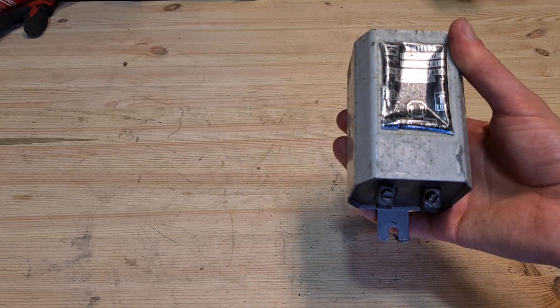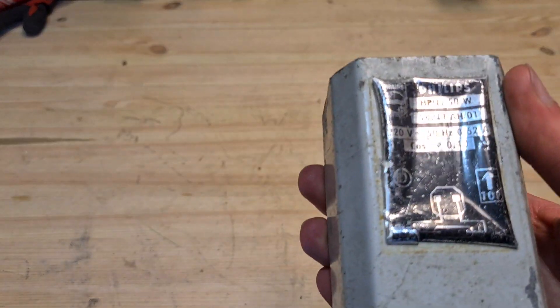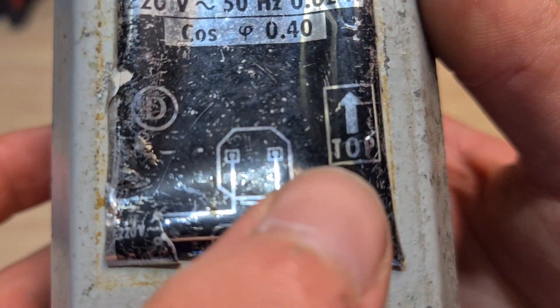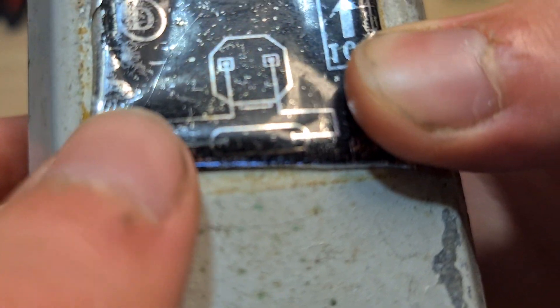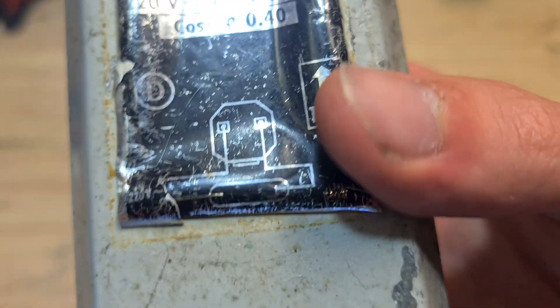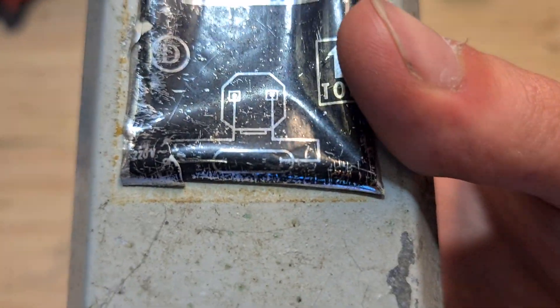We are going over an old and a new mercury vapor ballast, and also over the little drawing that's here. It pretty much says how to connect it, but it's pretty hard to read for some people, which is understandable.